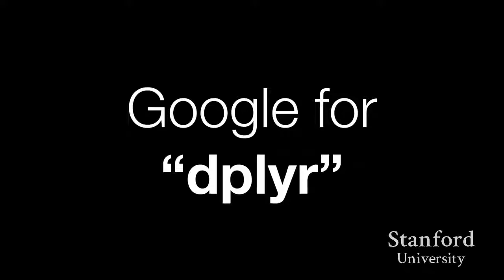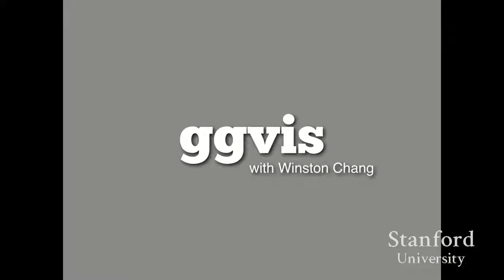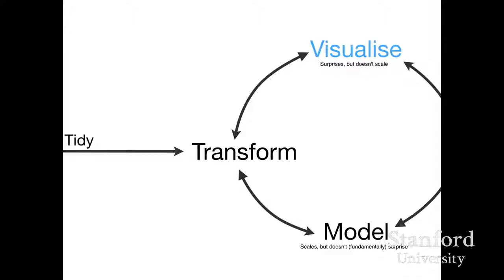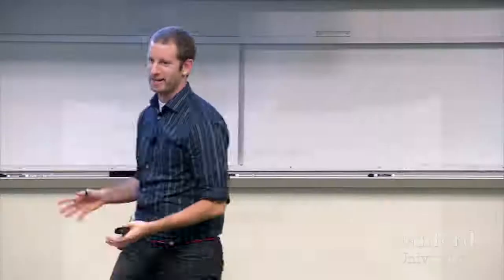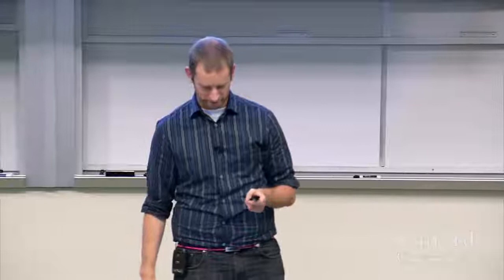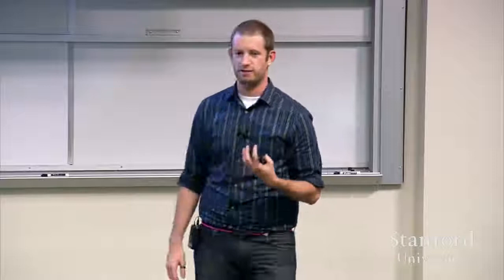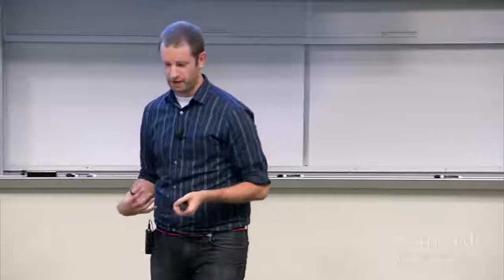The other project I want to talk about is called ggvis, joint work with Winston Chang, tackling the visualization problem squarely in the cognitive space. The three goals: first, you want to describe visualizations declaratively like you do in ggplot2. Second, the graphics should be of the web — not just on the web, but fundamentally web graphics: HTML, CSS, JavaScript. Third, it's built on reactive components in the sense of functional reactive programming, which allows a declarative specification of interactive and dynamic behavior.